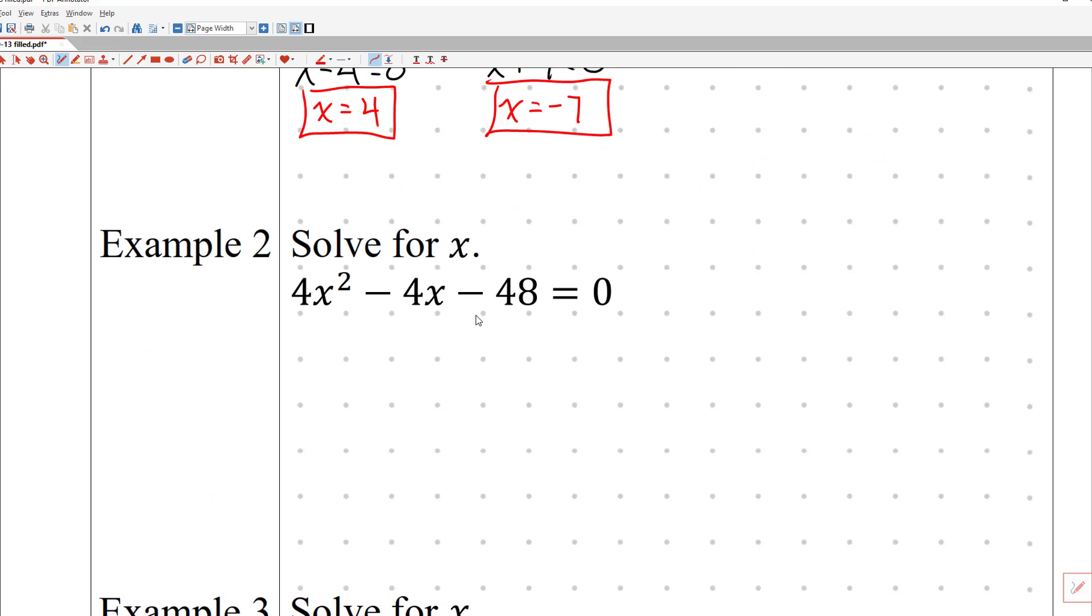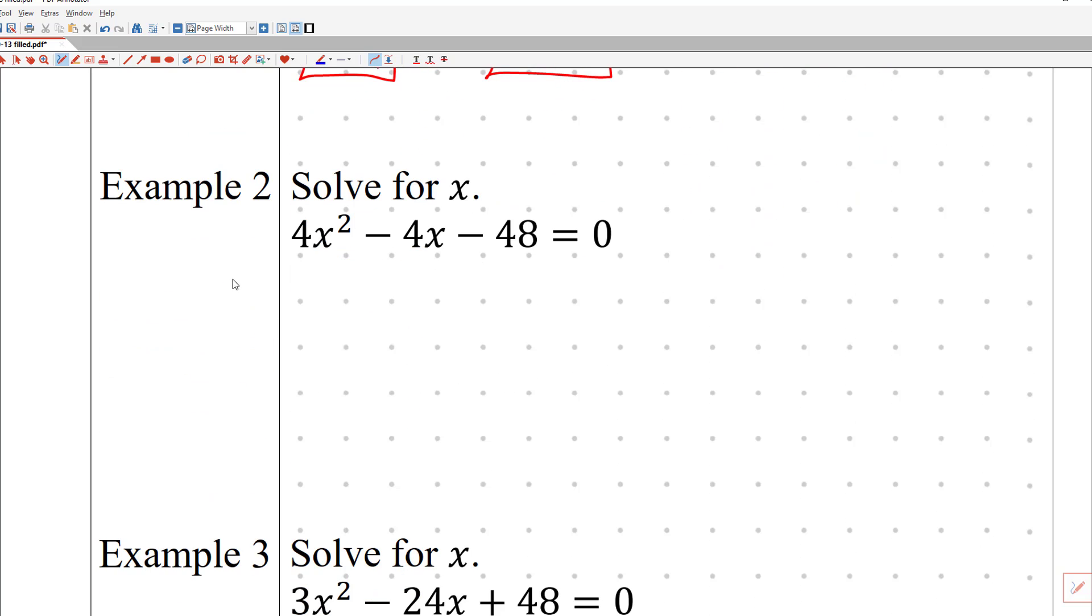Let's do example 2. So greatest common factor, again, is going to be that leading coefficient here for, at least for all of today's homework. So 4 times the quantity of, 4x squared divided by 4 is just x squared. Negative 4x divided by 4 is just negative x. 48 divided by 4 is 12. And that's set equal to zero.